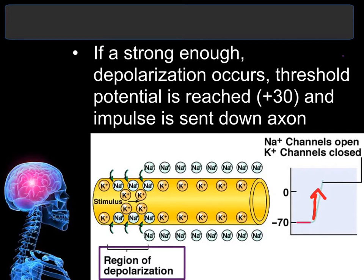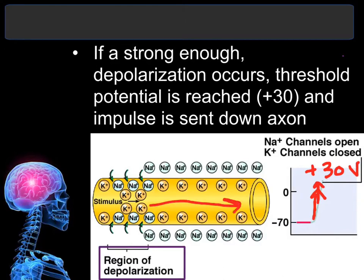Eventually, enough sodium rushes into the neuron that the charge continuously rises from negative 70 up to plus 30 millivolts. At that point, there is an action potential and a nerve impulse travels down the axon.